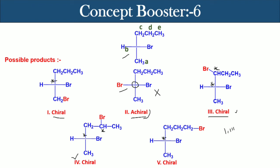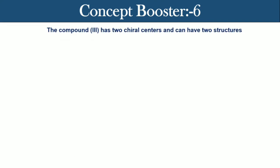Now, compound three has two chiral centers and can have two structures because the reaction goes through a planar radical intermediate like this.